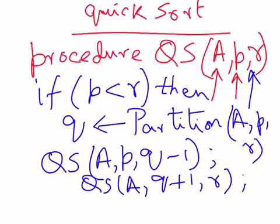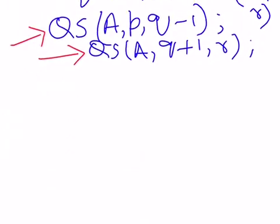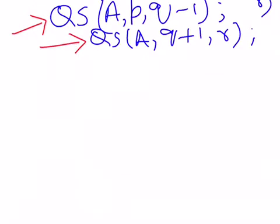The element q is left out because, if you recall, at every partitioning step we fix the position of one of the elements — the pivot element — correctly in the sorted array. So there is no need to pass that element anymore. In the first part we pass the array starting from p to q minus one, and in the second part we pass q plus one to r.